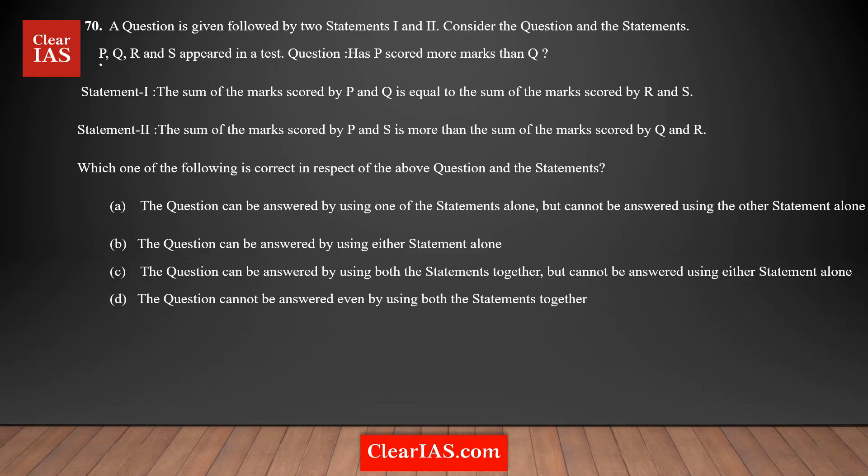Question number 70: P, Q, R and S appear in a test. The question is, has P scored more marks than Q? So is P greater than Q? This is what they're asking you to find. You should get a definite yes or a definite no as the answer. If you're getting maybe yes or maybe no, in some case yes, some case no, that means the statements are not sufficient. You should have a clear idea what you need to look for in a yes or no type data sufficiency question.